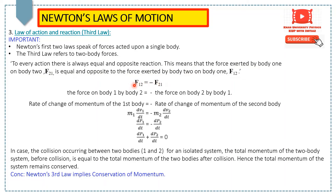Both forces are equal in magnitude but opposite in direction, as indicated by the minus sign. The force on body 1 by body 2 equals minus the force on body 2 by body 1. We can also describe these in terms of momentum: the rate of change of momentum of the first body, m₁·(dv₁/dt), equals minus the rate of change of momentum of the second body, −m₂·(dv₂/dt). In terms of momentum: dp₁/dt = −dp₂/dt.